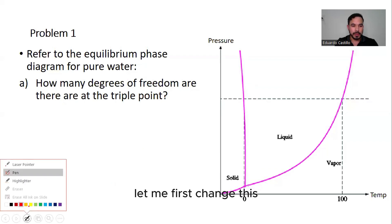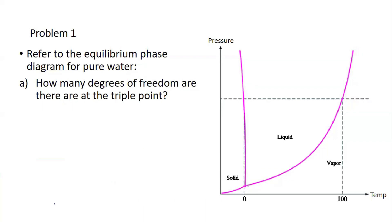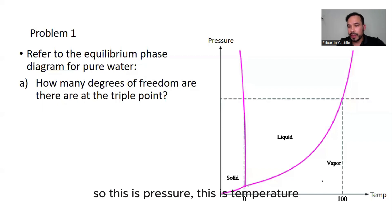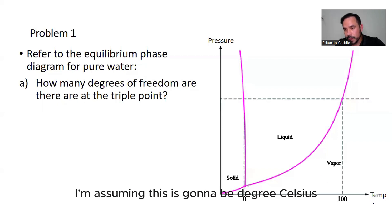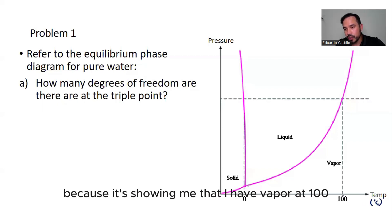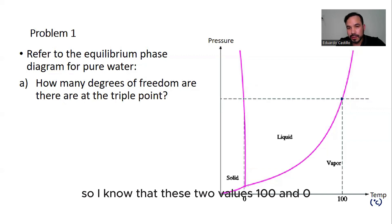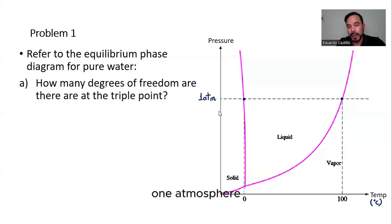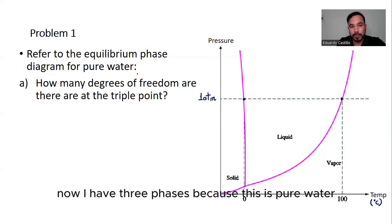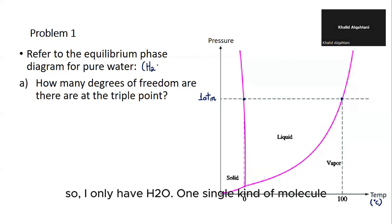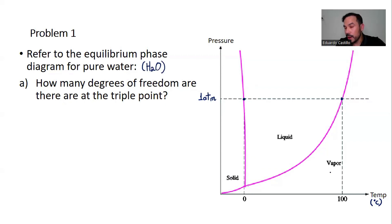Let me set this up. This axis is pressure and this is temperature — degrees Celsius — because it's showing vapor at 100°C and solid around 0°C. Those values of 100 and 0 correspond to a pressure of one atmosphere. I have three phases because this is pure water, only H₂O — one single kind of molecule. I have solid, liquid, and vapor.